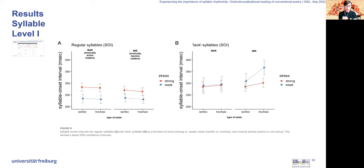For the tux syllables, we found that the weak tux were read longer than the strong tux. That's the blue line over the red line overall. But this effect was more pronounced in the trochaic poems, as you can see.